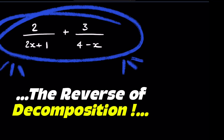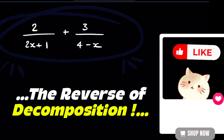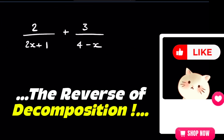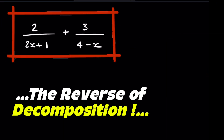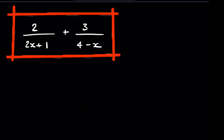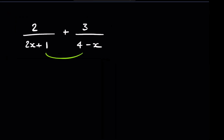It's very important to understand what we're trying to achieve when we do the decomposition. First of all, what I'm going to do is show you the reverse of the decomposition — that is, when we add these fractions together. What we need to do is multiply the denominators together.